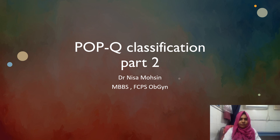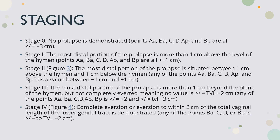Starting with the staging: to understand the grids and exactly where the defect is and how to quantify that defect, you must first know about the staging. Stage 0 is no prolapse — if no prolapse is demonstrated, points Aa, Ba, C, D, Ap, and Bp are all less than or equal to minus 3 centimeters. Stage 1: the most distal portion of the prolapse is more than 1 centimeter above the level of the hymen.